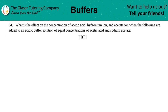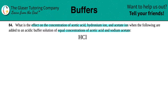Number 84. What is the effect on the concentration of acetic acid, hydronium ion, and acetate ion when the following are added to an acidic buffer solution of equal concentrations of acetic acid and sodium acetate? So basically we just have to figure out what's going on with acetic acid, hydronium ion, and acetate ion when we add HCl.